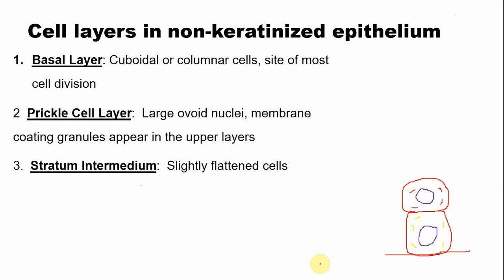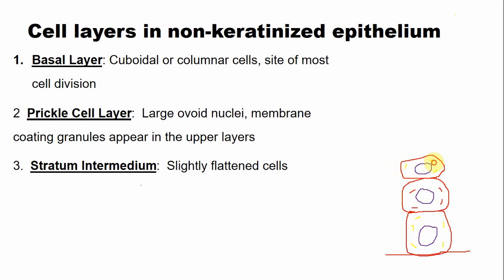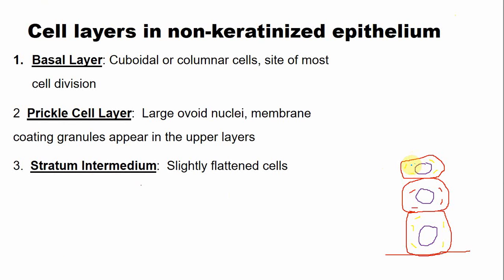The next cell layer is the stratum intermedium, also known as the intermediate layer. As compared to the keratinized epithelium, the intermediate layer is slightly flattened. The number of organelles is less, but they are present. The nucleus, individual tonofilaments, and glycogen granules are present in the stratum intermedium.